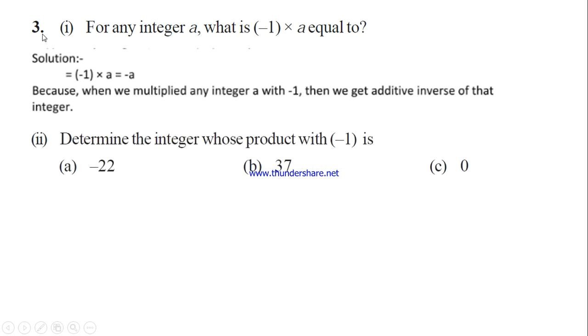In the third question, next part: determine the integer whose product with minus 1 is. Here they gave whose product with minus 1. With this we have to multiply. We are going to multiply what number with minus 1. This 37 we are going to multiply with minus 1, this 0 we are going to multiply with minus 1.